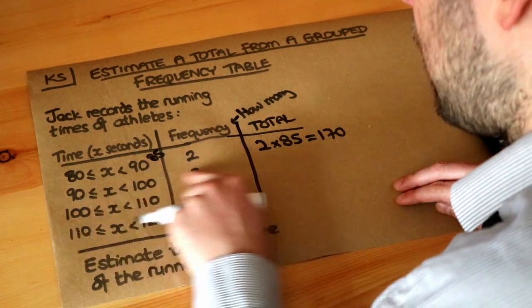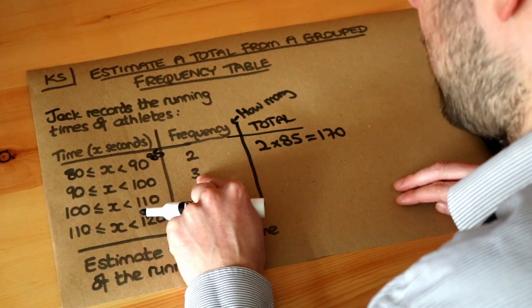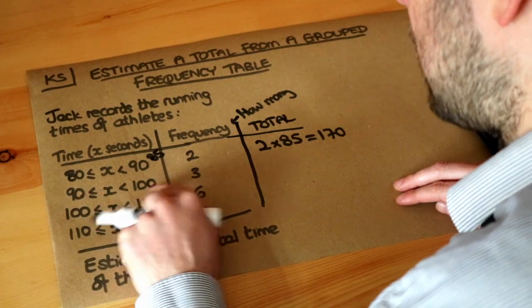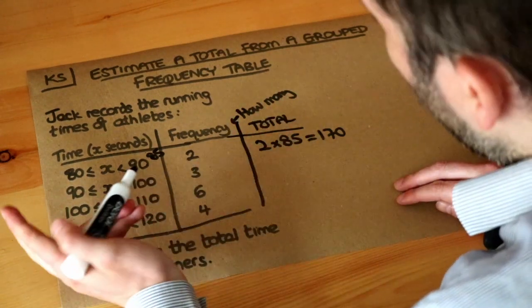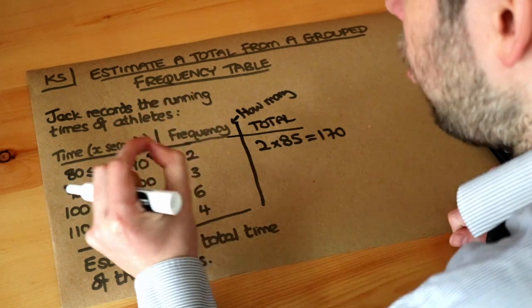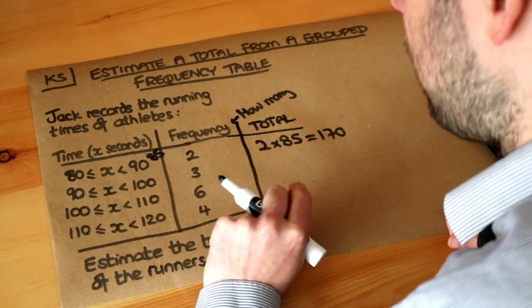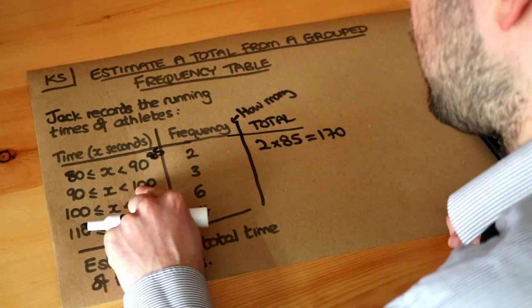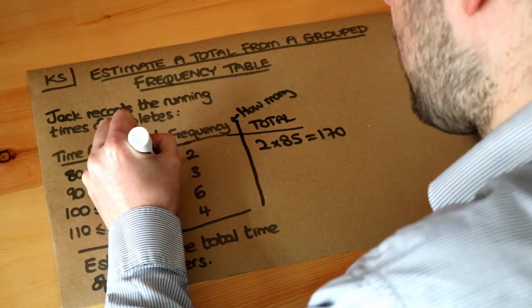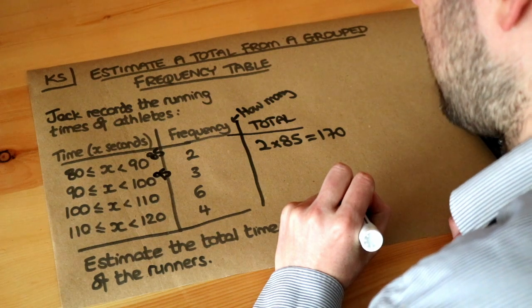Let's do the same with the next row. We've got three athletes with a time of between 90 and 100 seconds. Now we don't know what their time was, but we're just going to assume that each of them averaged at the middle of 90 to 100. So the midpoint, we take the midpoint of 90 to 100, and we're just going to assume that each athlete had a time of 95 seconds.